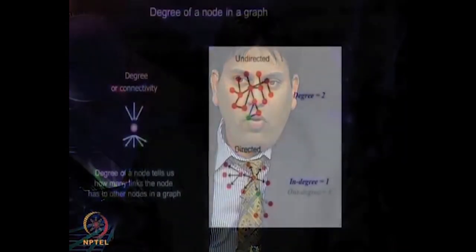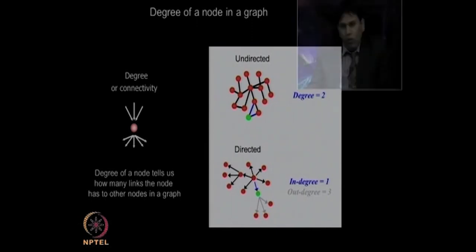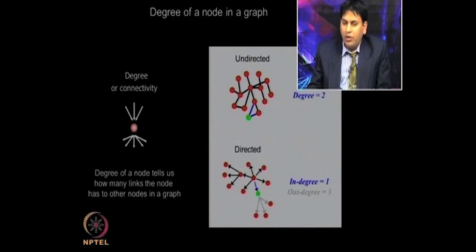For instance, if you are studying the degree of a node in an undirected network, as shown in the top example, the fluorescent node has a degree equal to 2. On the other hand, a directed node example shown at the bottom has a degree equal to 4 because it is connected to 4 other nodes. However, you can also distinguish in-degree and out-degree: in-degree is the number of incoming connections of a particular node. The green or fluorescent node here has an in-degree of 1. It also has an out-degree equal to 3 because it is directing 3 other nodes shown in red.